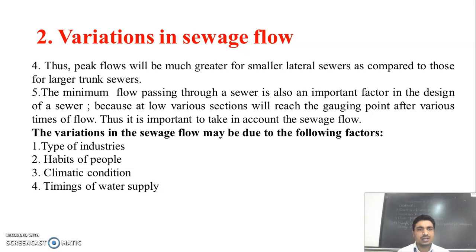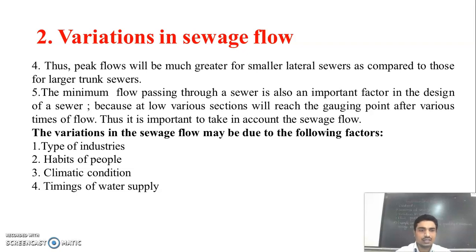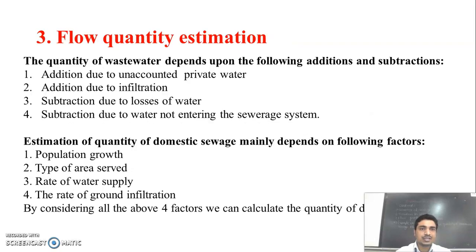There are various factors causing variation in sewage flow. The first is the type of industry — what type of industry is there, depending on that, the sewage varies. Then the habits of people — according to the habits of people, sewage flow varies. Climatic condition also plays a role in the variation of sewage flow. Then the timing of water supply — at what time water is supplied to the people — is also important in the variation of sewage flow.